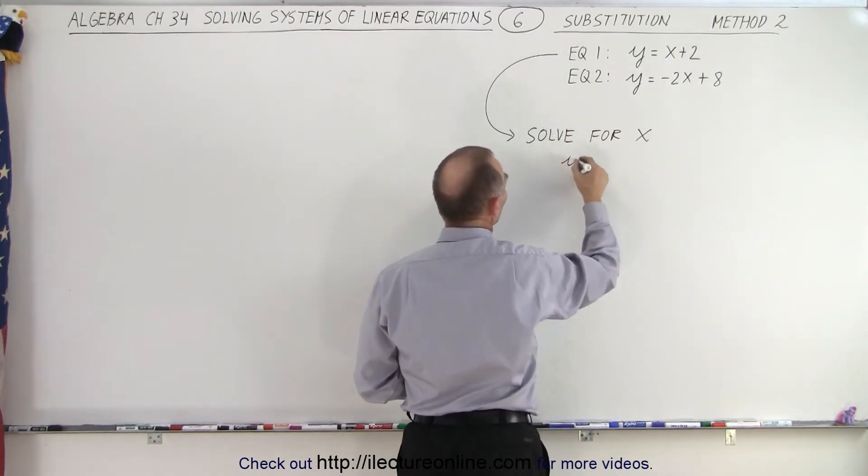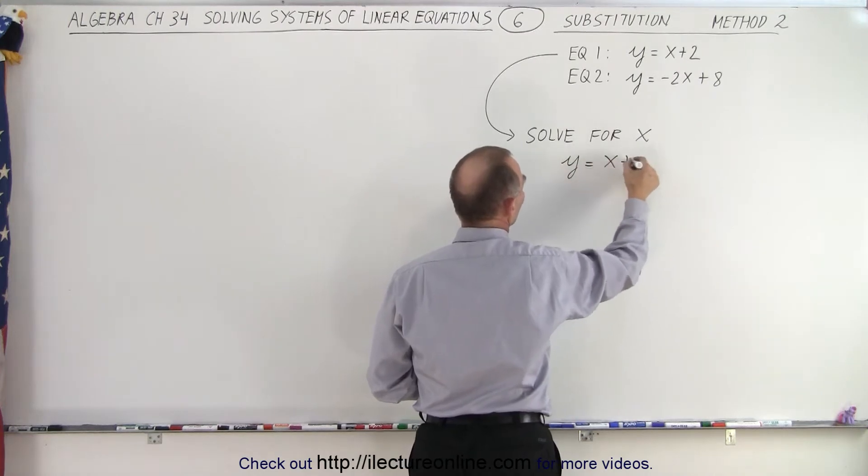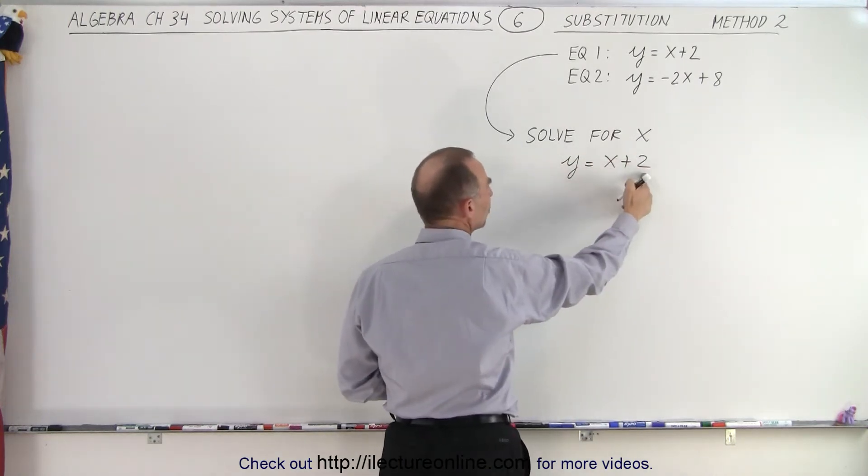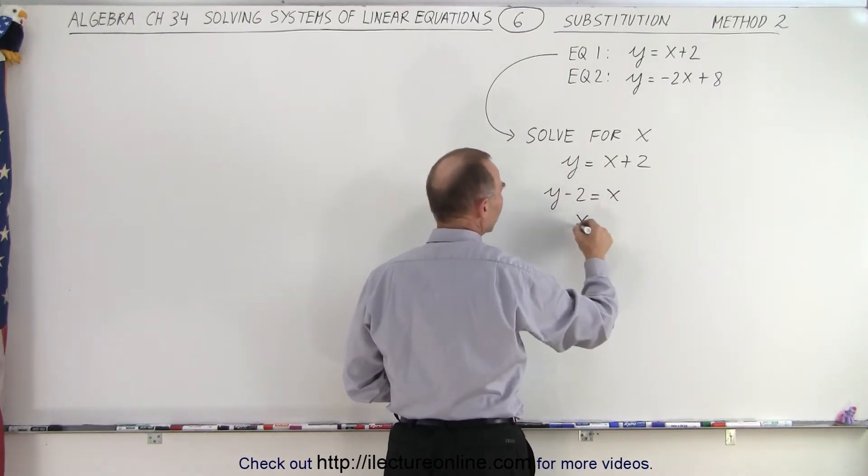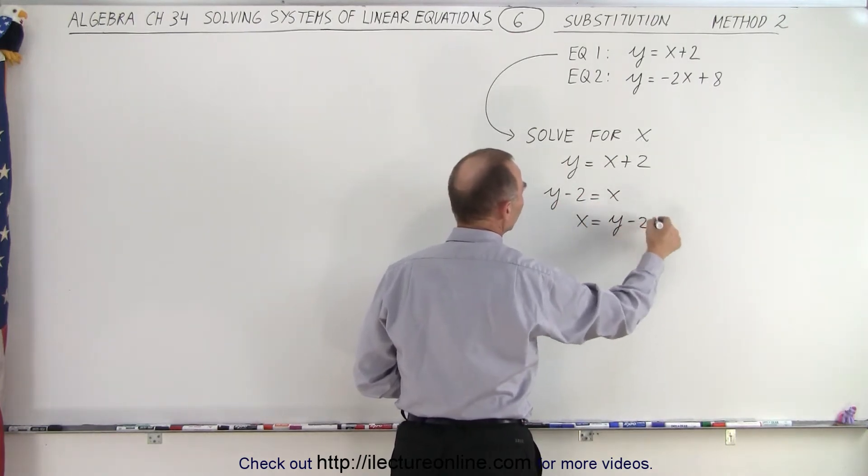So when we do that, we have the equation y equals x plus 2, and that means I'm going to move the 2 to the other side. So I end up with y minus 2 is equal to x, or x equals y minus 2.